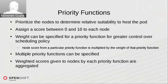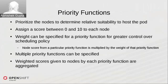Moving on to priority functions, these come into play in the second phase of scheduler functioning. They determine the relative suitability of a node to host a given pod. Each priority function assigns a score of 0 to 10. You can specify a weight per function, and the weighted scores from all priority functions are aggregated to produce final scores for each node.